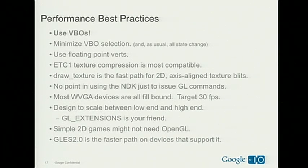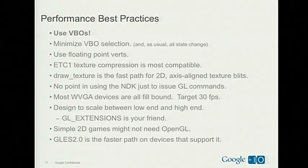There's no advantage to using fixed-point verts — floating-point verts are actually faster in most cases. ETC1 texture compression is the most compatible across OpenGL ES 2.0 devices, though it's generally not supported by 1.0/1.1 devices and doesn't support alpha. For 2D texture blitting, the draw texture extension is pretty much universally supported and is the fast path for 2D. WVGA devices are fill-bound so your target should be 30 fps. Use GL extensions to scale between the low and high end. For a simple 2D game, especially targeting high-end devices, you could probably get away with CPU drawing using Canvas, though it has a lower ceiling on low-end devices.